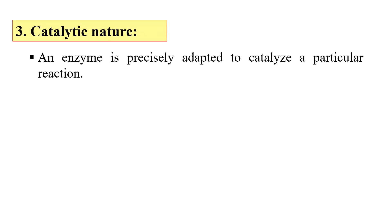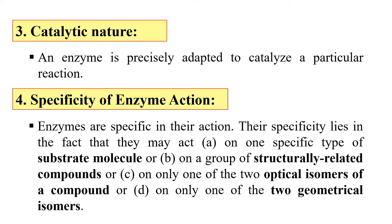The next property is catalytic nature. Enzymes have catalytic nature, meaning they can catalyze chemical reactions. Generally, enzymes do not produce side products — they are very specific for a particular reaction. The next property is the specificity of enzyme action. A specific enzyme will only catalyze a specific reaction. This specificity is divided into many kinds: on the basis of the substrate molecule, structurally related compounds, optical isomers, and geometrical isomers. So enzyme action is very much specific.